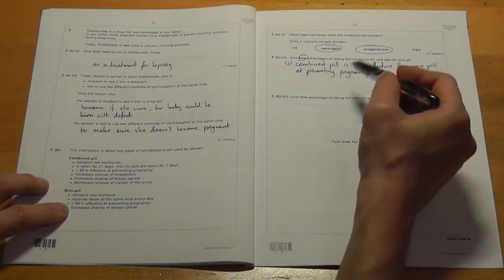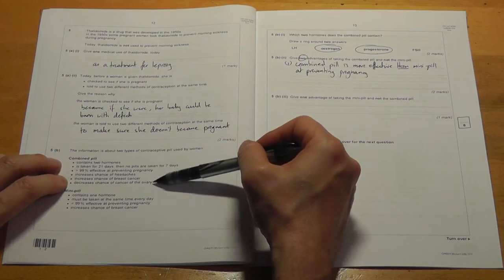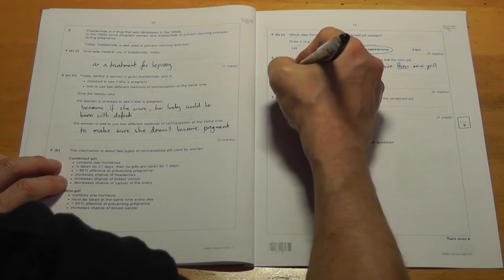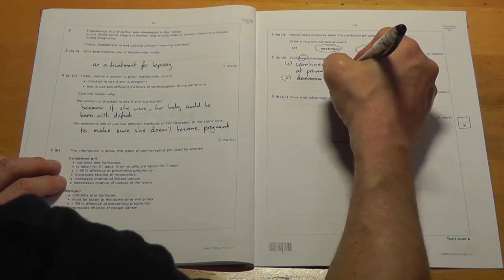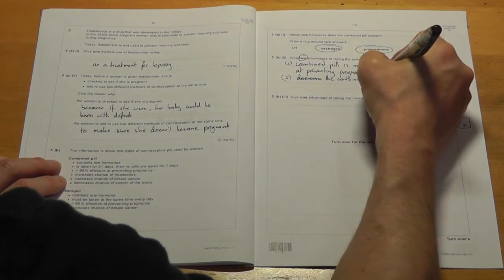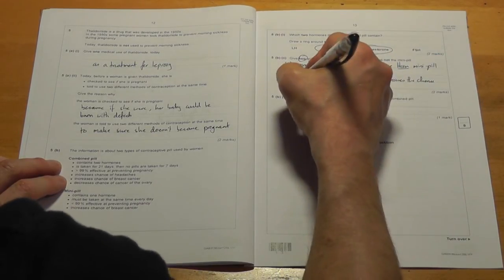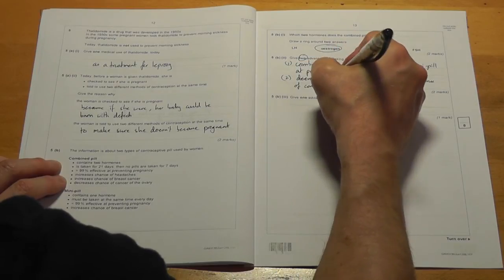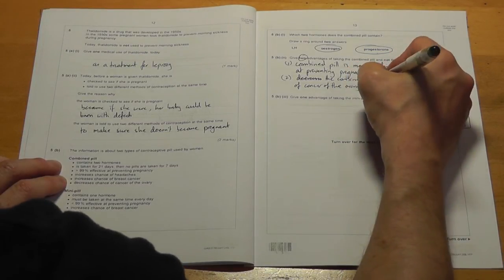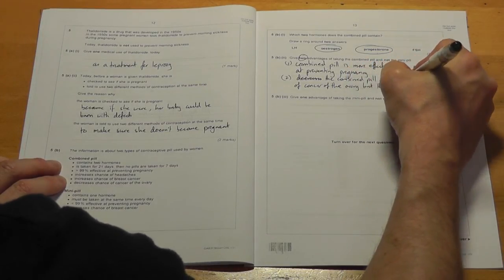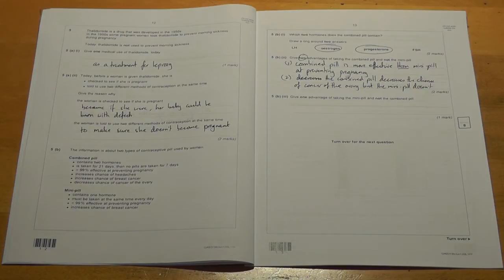And I've got to give two. Look, it's in bold. So try and get the word than in there. And the second one, an advantage of the combined pill. Okay, well, it tells me it decreases the chance of cancer of the ovary. I can't put the word than in, but I can put the word but in, but the mini-pill doesn't. So I've made sure there that I've combined both one.